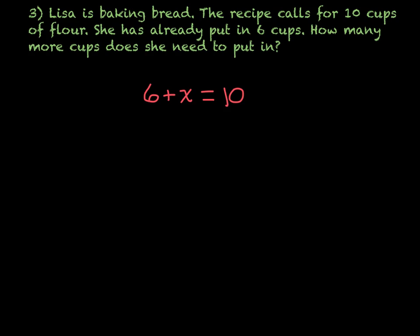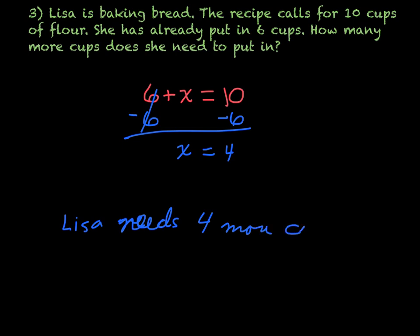Here's the equation. To solve it, subtract 6 from both sides because the opposite of plus 6 is minus 6. So x equals 4. Lisa needs 4 more cups of flour. That's your final answer.